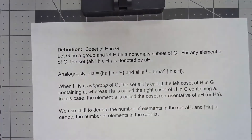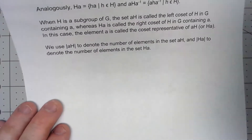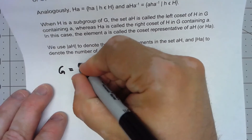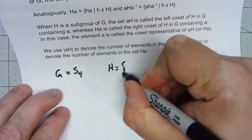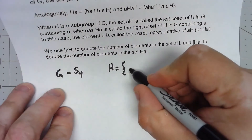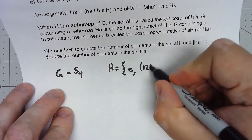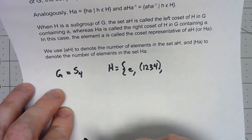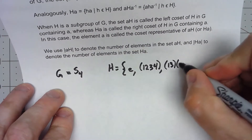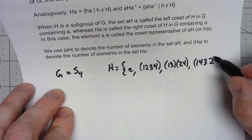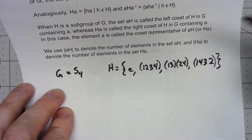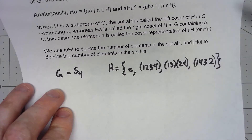Let's say my group G is equal to S4, and the subgroup H that I want to look at contains the identity, (1 2 3 4), (1 3 2 4), and (1 4 3 2). I'll leave it to you to verify that that actually is a subgroup, but I should point out that it's a cyclic subgroup — (1 2 3 4) is a generator for that subgroup.